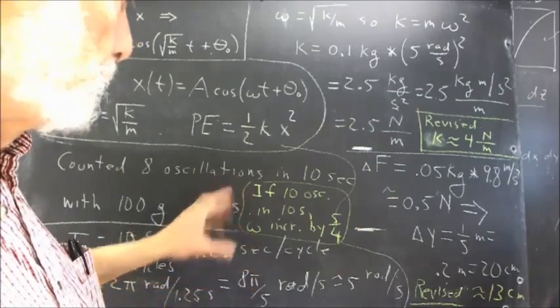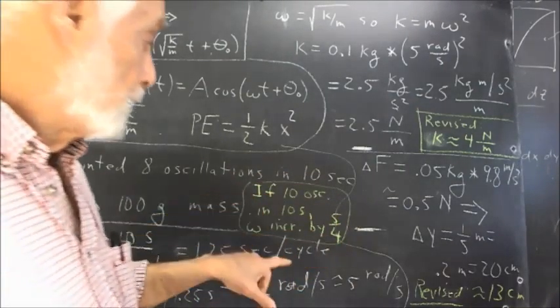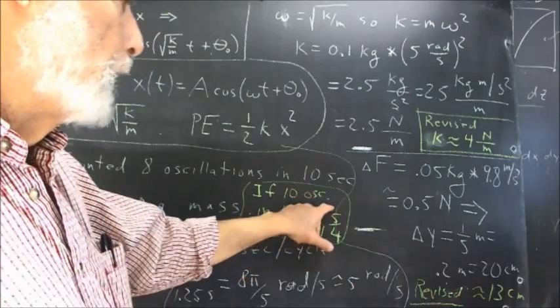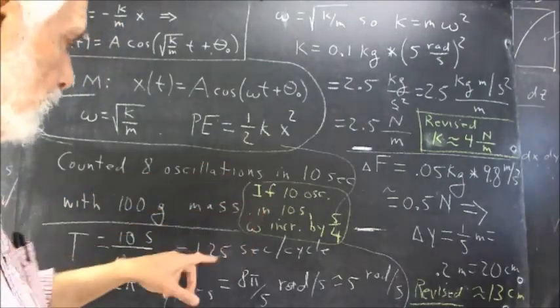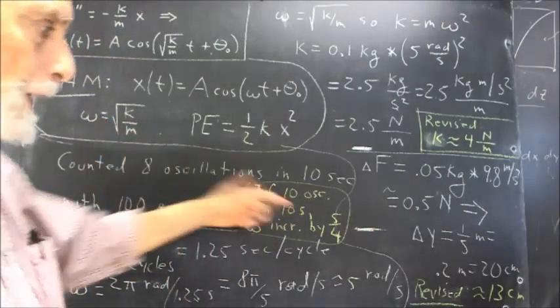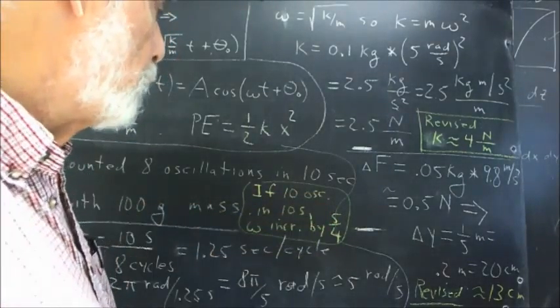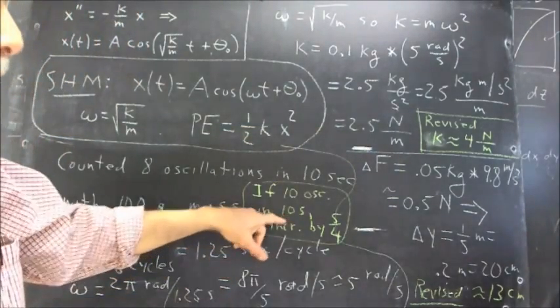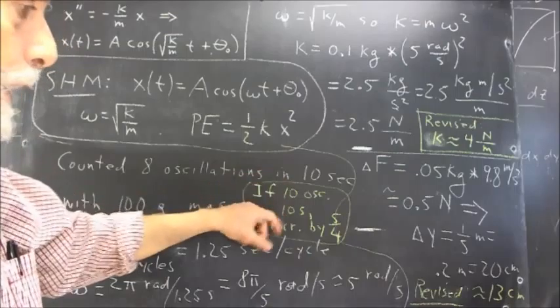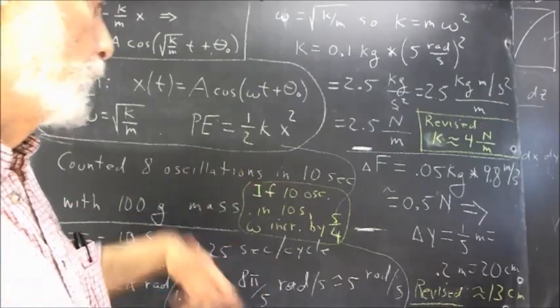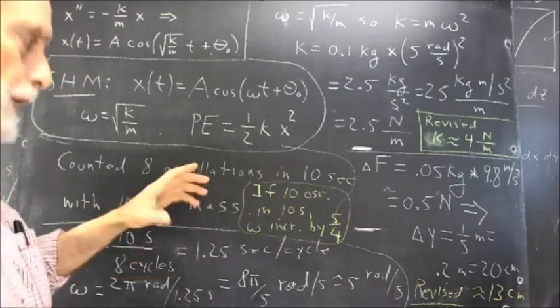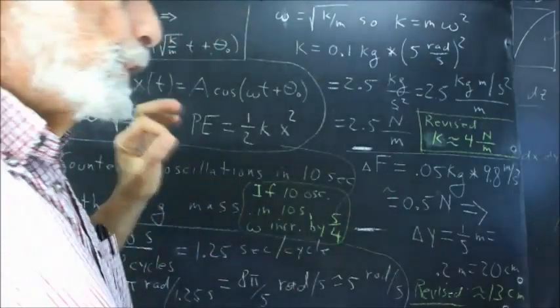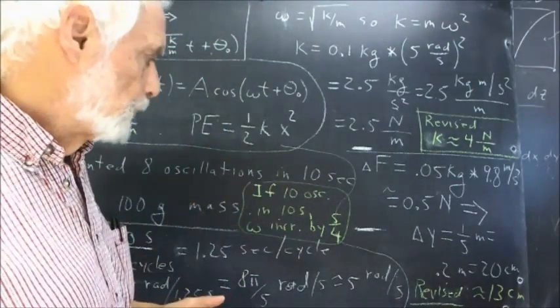And carrying that through, what we did was we changed omega by a factor of five-fourths. We went from 8 count in 10 seconds to a 10 count. 10 eighths is five-fourths. We increased omega by a factor of five-fourths. Now we could go through and recalculate all this with an omega equal to 10 cycles in 10 seconds as one cycle per second, which is two-pi radians per second, which is 6.28 radians per second. We go through and recalculate everything, but we can use the whole idea of variation and proportionality.